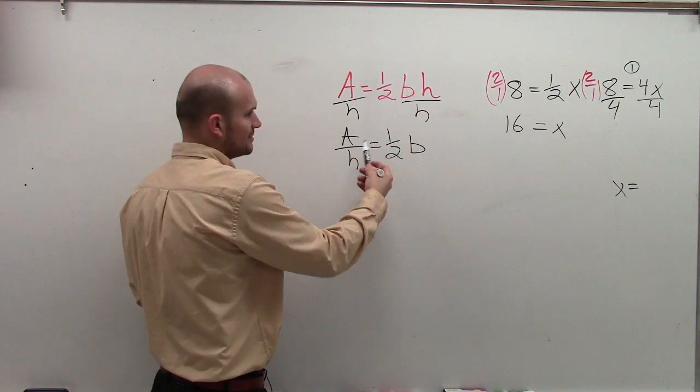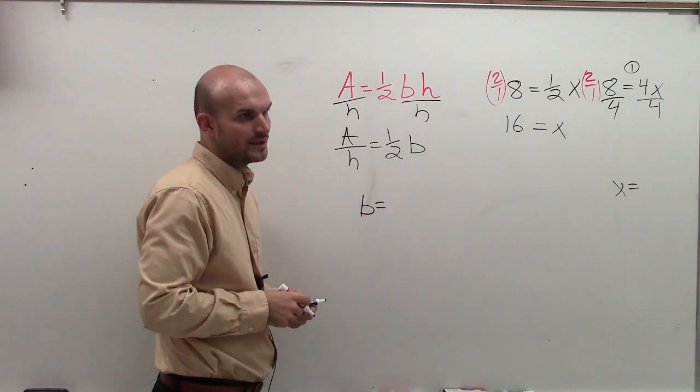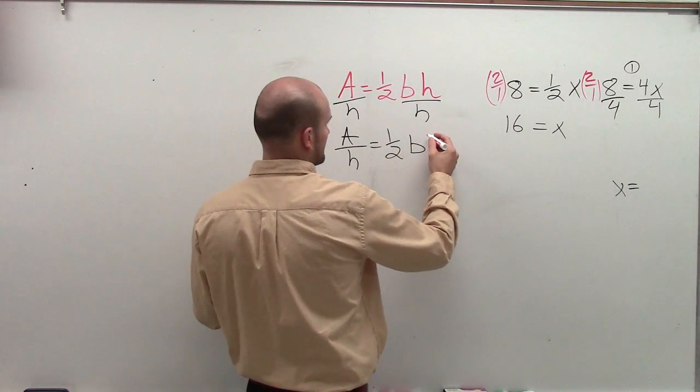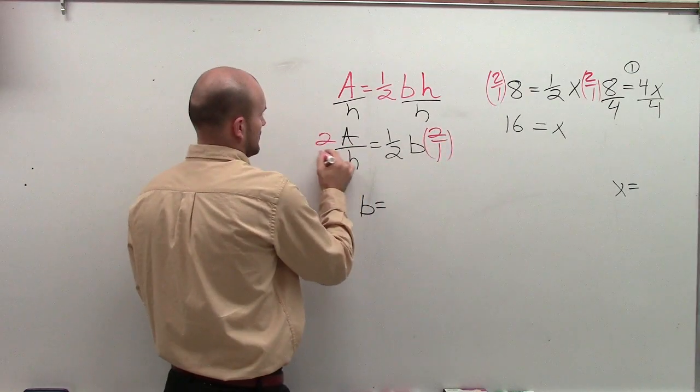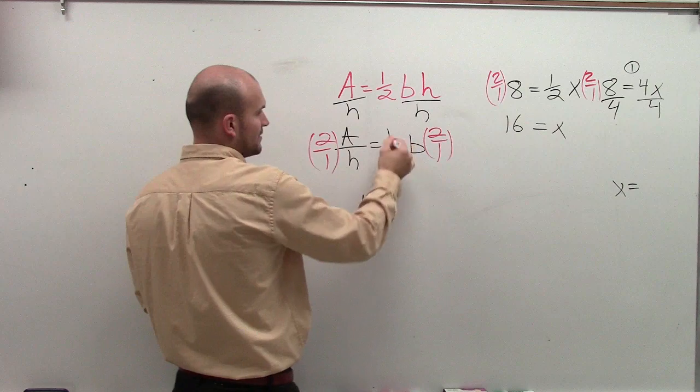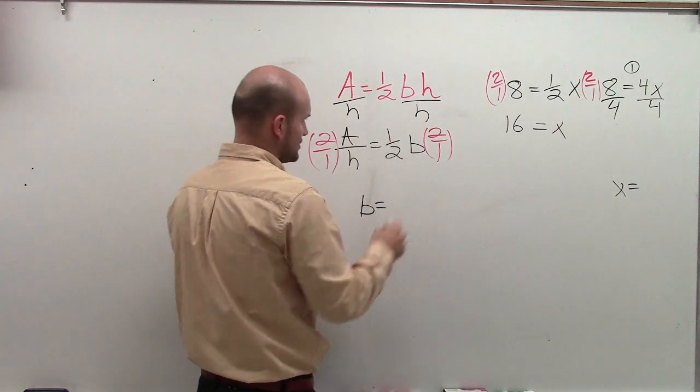So here, what do you think you're going to want to do with the one-half b? 2 over 1. Right, 2 over 1. So therefore, again, those go to 1. So you're left with b.